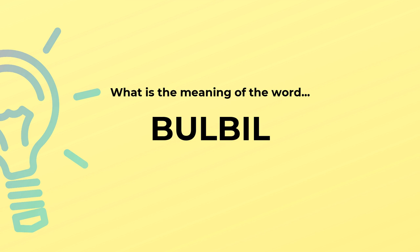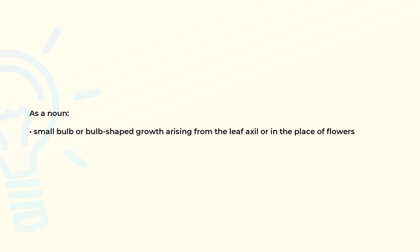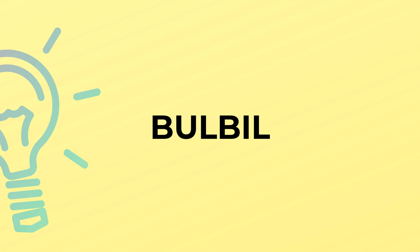What is the meaning of the word bulbil as a noun? Small bulb or bulb-shaped growth rising from the leaf axilla in the place of flowers. Bulbil is spelled b-u-l-b-i-l.